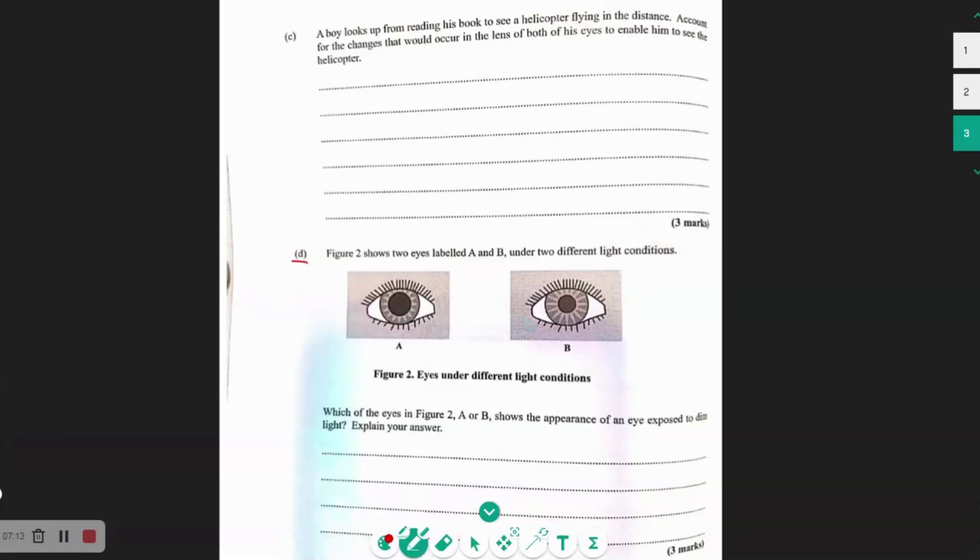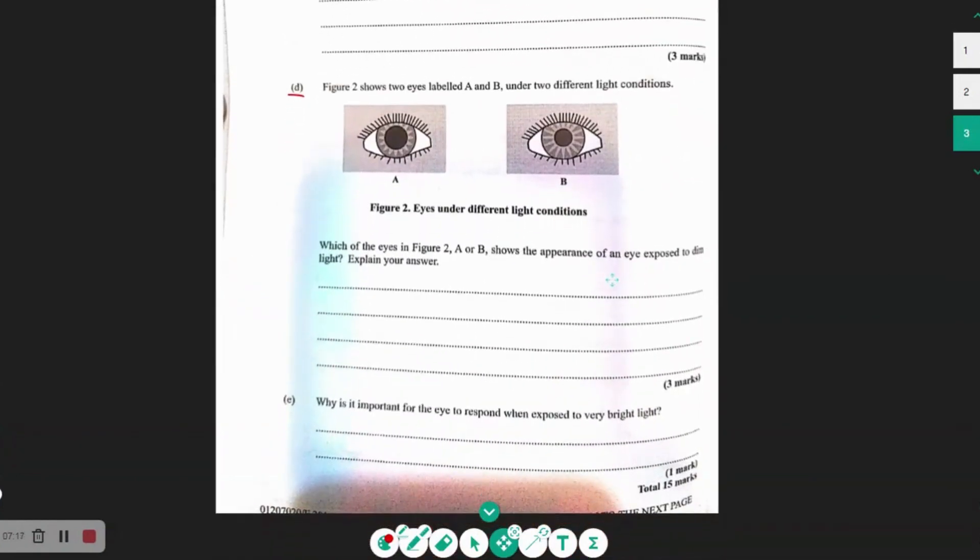Then part D, so this final part, so figure 2 shows 2 eyes labelled A and B under different light conditions. This here is showing us, remember, the pupil effect. So when we're in bright light or when we're in dim light, there's a difference in terms of the size of the pupil. So this is what they're asking us here.